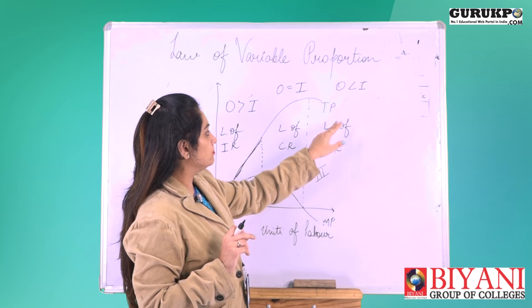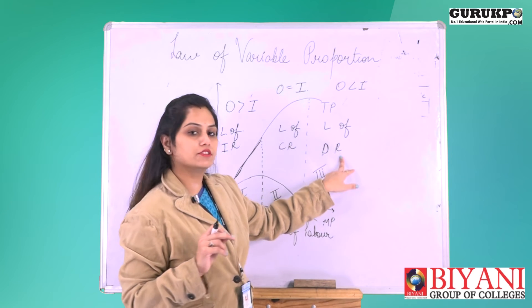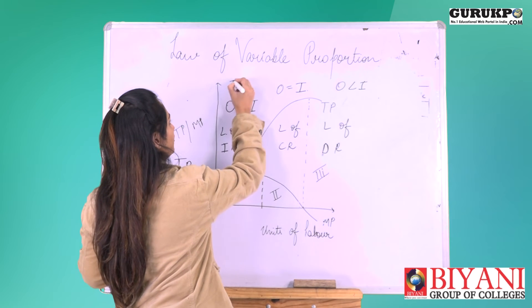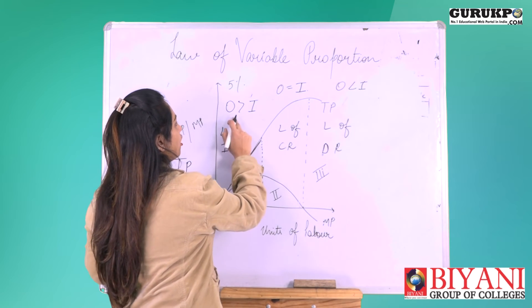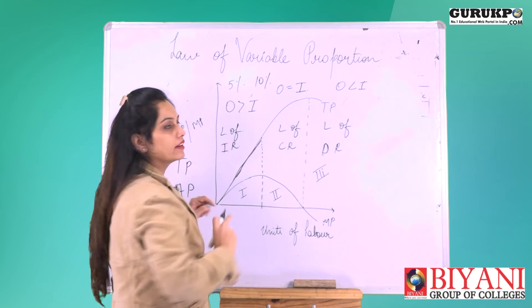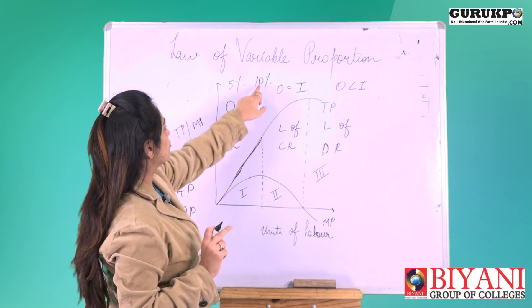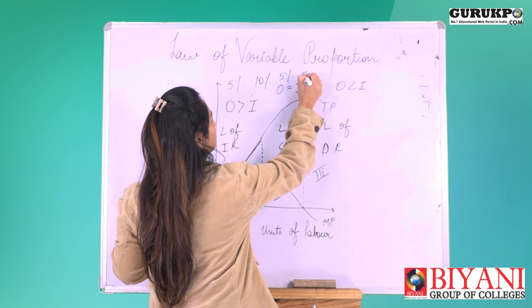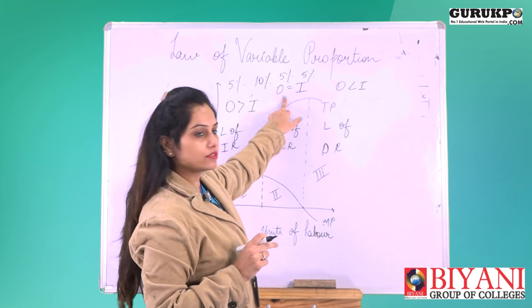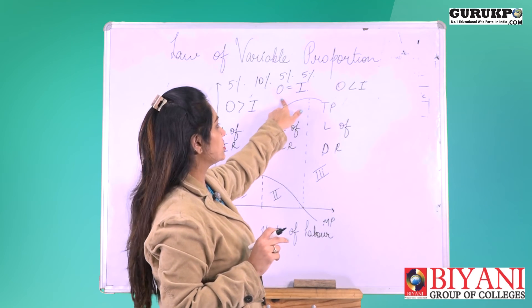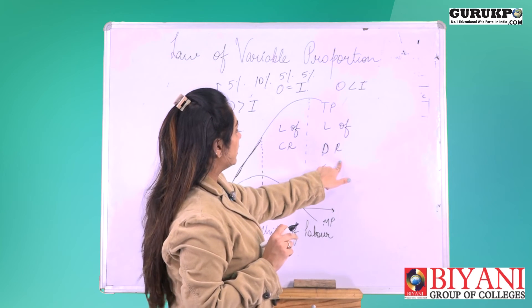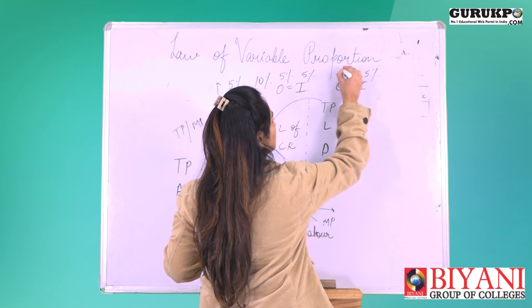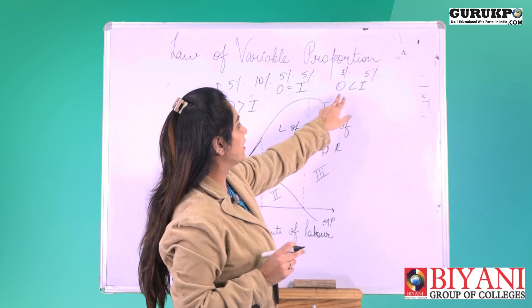For example, if we change the input by 5% and the output increases by 10%, this is the law of increasing returns — output is more than the change in input. When input changes by 5% and output also changes by 5%, that is constant returns. When we increase the input by 5% and output increases by only 3%, this is the law of decreasing returns to factor.